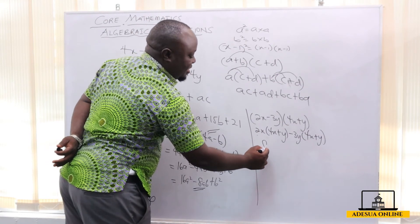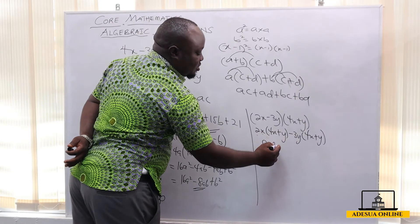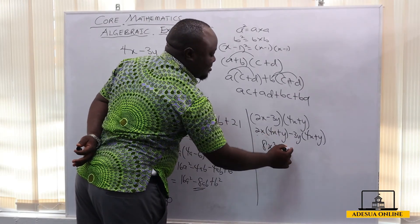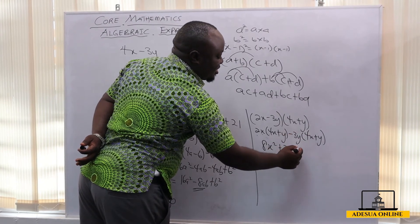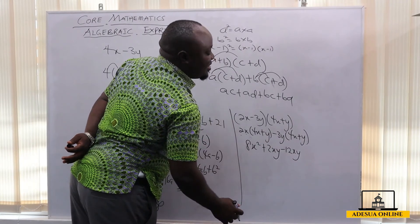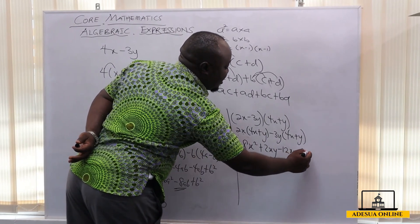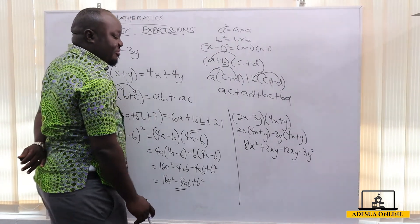When we expand this, 2 times 4 is 8, x times x is x², 2 times 1 is 2, and x times y is xy. Minus 3y times 4: minus 3 times 4 is minus 12 times xy, and then negative 3y plus y is negative 3y².